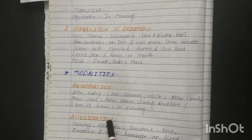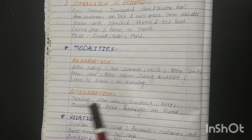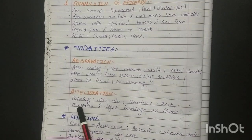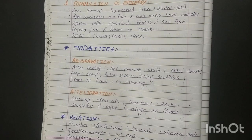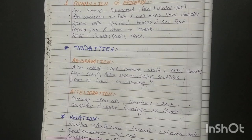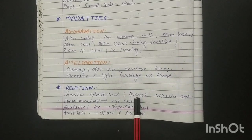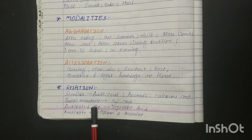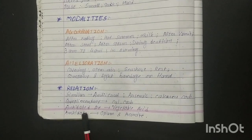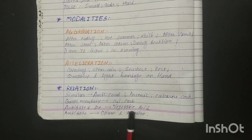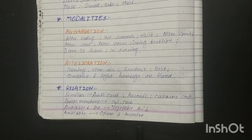Modalities — aggravation: in morning, after eating milk in any form, in hot summer, after vomiting, after stool, after spasm, during dentition, particularly 3am to 4am, and in the evening. Cholera aggravation is in the morning. Amelioration: covering, in open air, rest, and company — the baby is better when the mother is present. Relations: similar to Antimonium Crudum, Arsenicum, and Calcarea Carbonica; complementary to Calcarea Carbonica; antidoted by vegetable acids; antidote for Opium and Aconite.